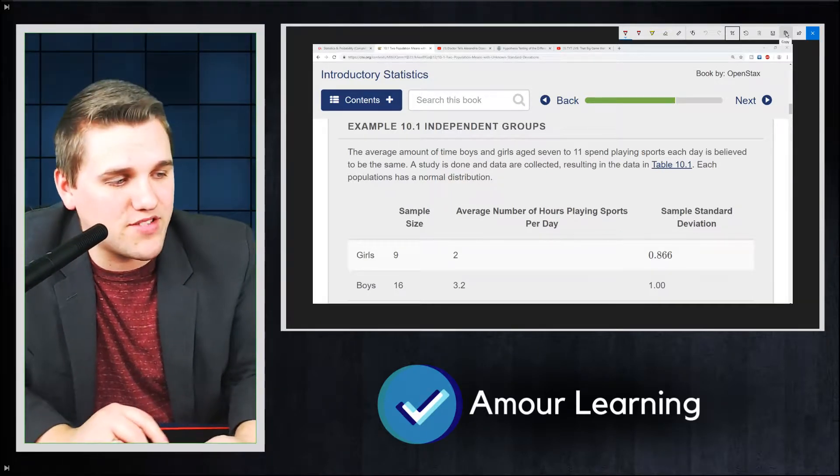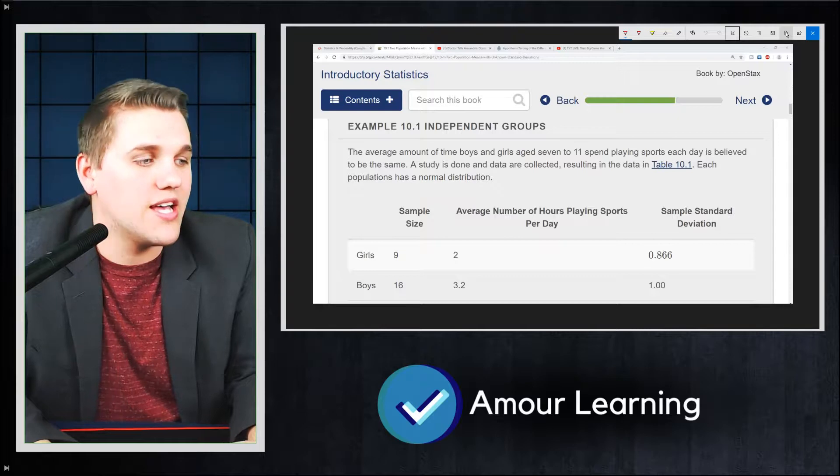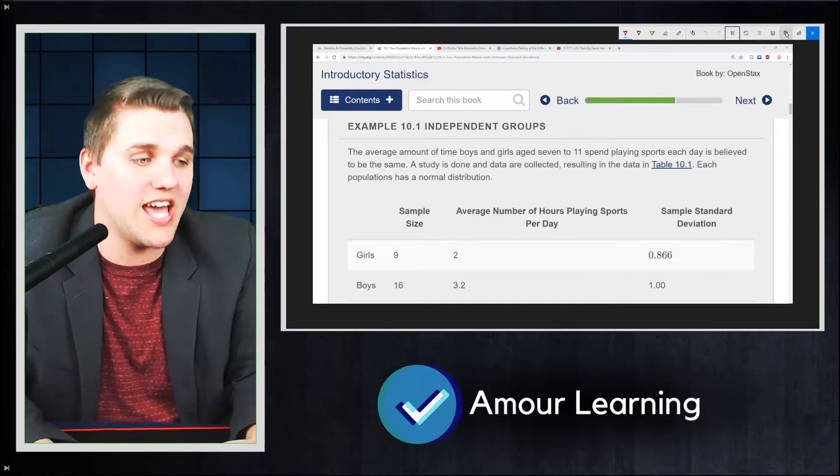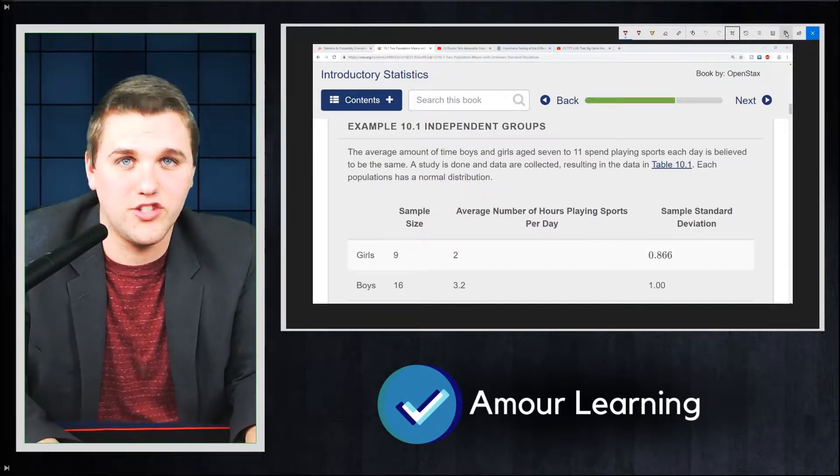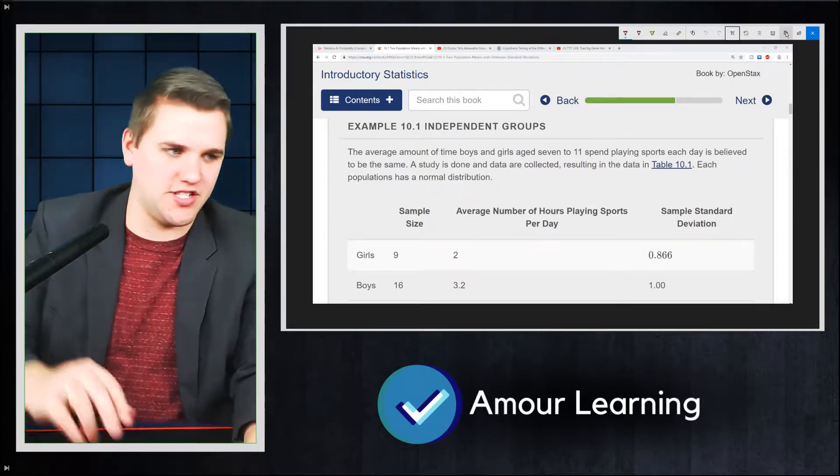This is example 10.1 independent groups. It says, the average amount of time boys and girls aged 7 to 11 spend playing sports each day is believed to be the same. So that's the null hypothesis that gender shouldn't make a difference here.